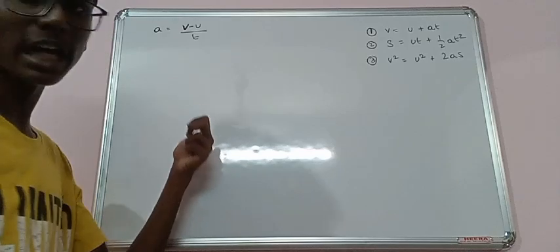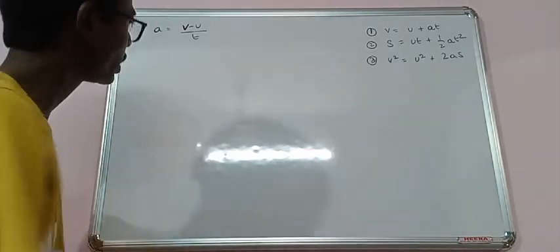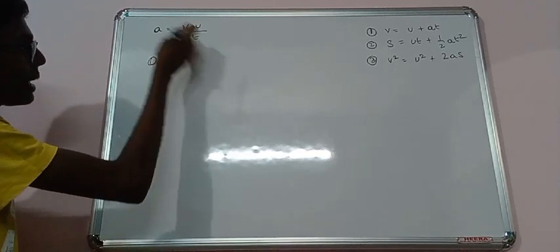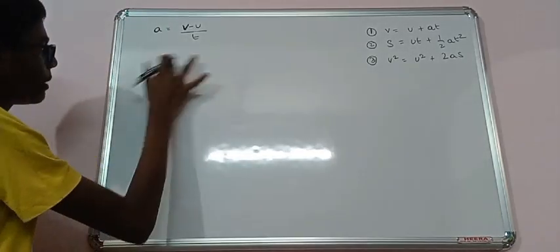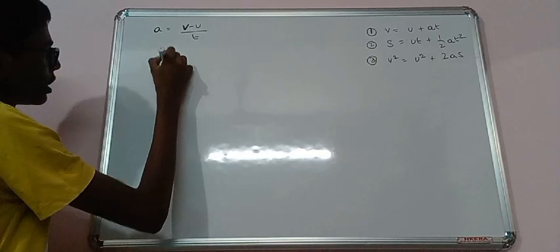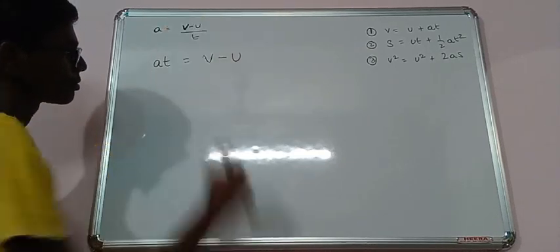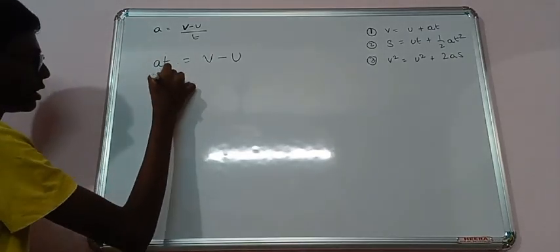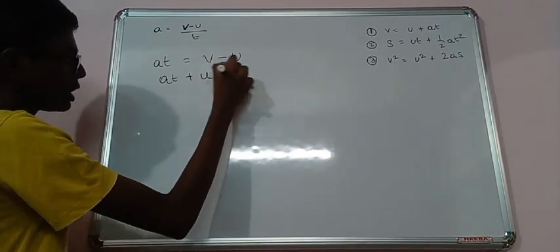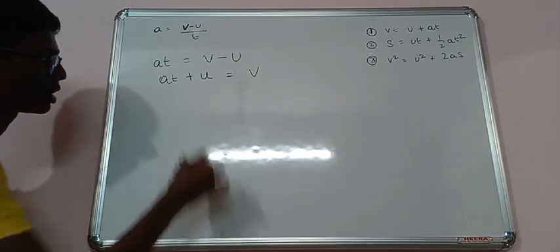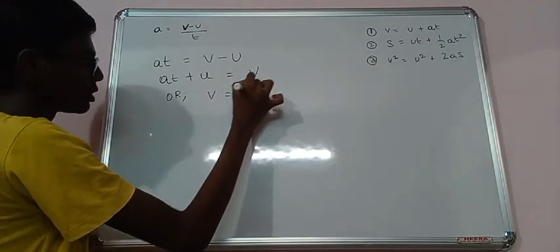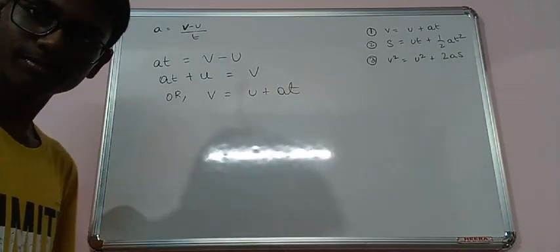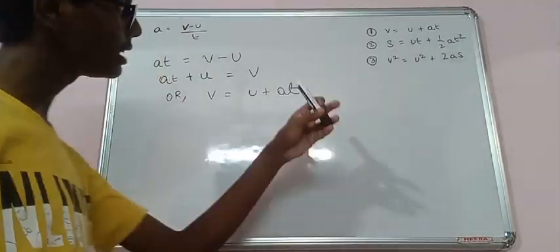Many people have already understood how to derive. And those who have not understood for them I am deriving. At first let us multiply T this side. We can do by applying simple mathematics. AT equals to V minus U. Very simple. And we will shift U this side. So AT plus U equals to V. Or in other words, V equals to U plus AT. Derived. Done. This was such easy.